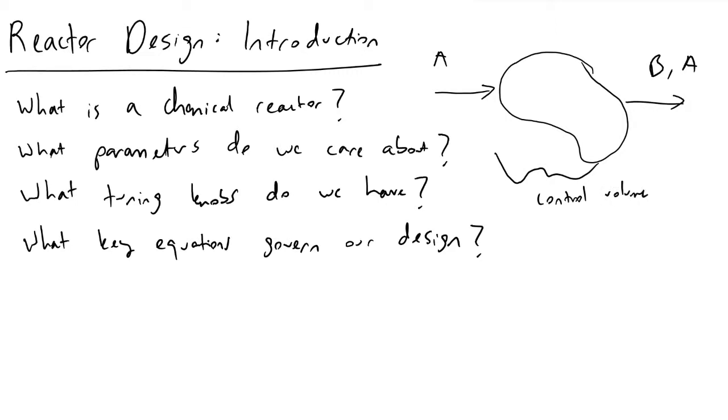Essentially what your job is in reactor design is to take this control volume and figure out what is the best control volume to use in order to maximize your conversion of B, so that you don't need to do as much extraction or expensive distillation downstream of your reactor.